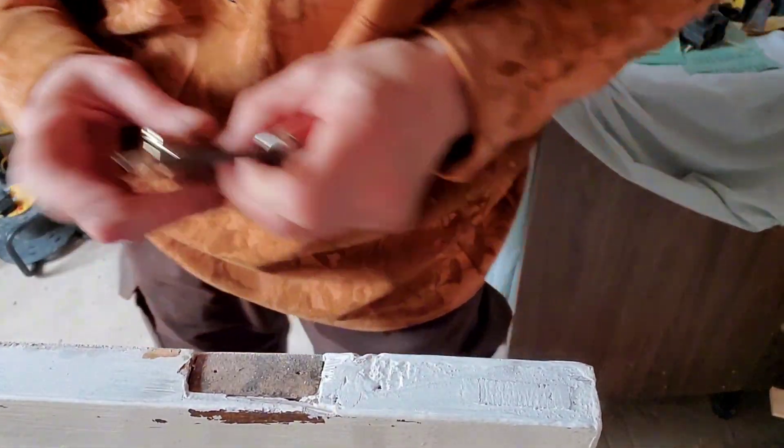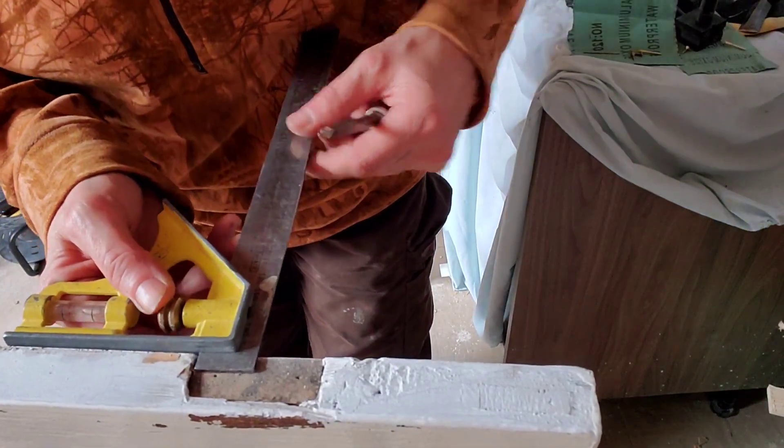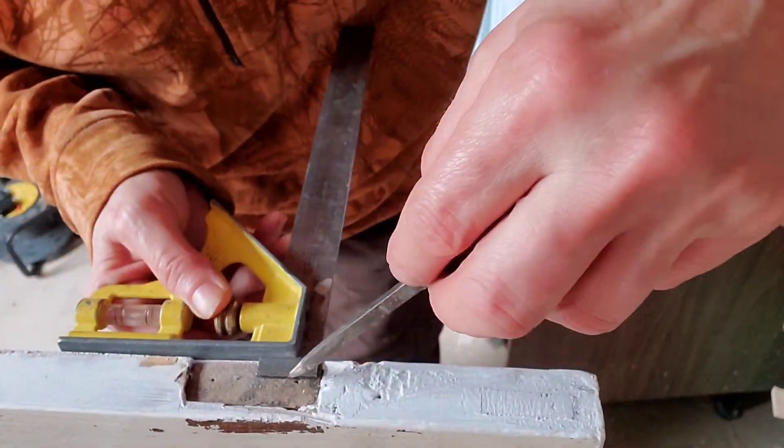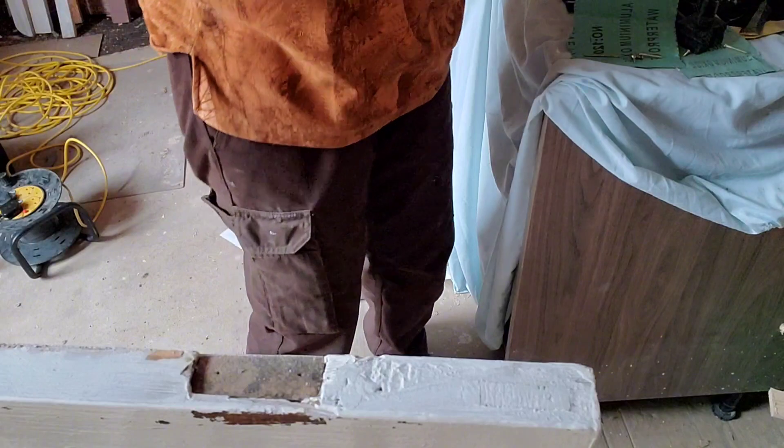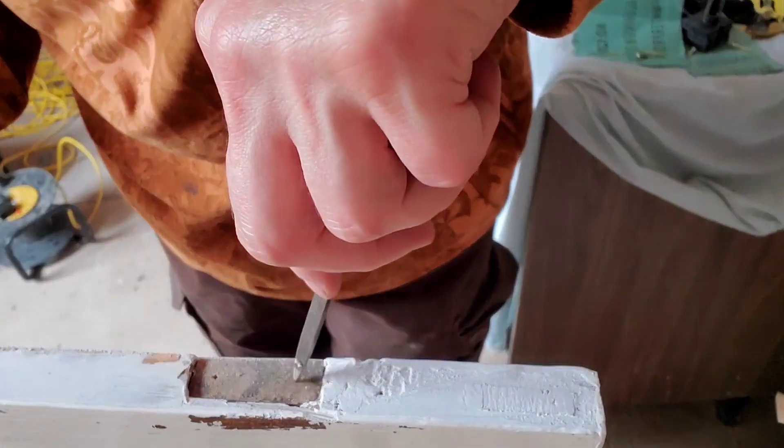Then I will double check with my combination square that they're parallel. Good thing about the braddle is it makes a starting point for the screw or drill bit.